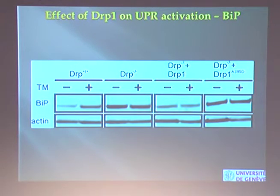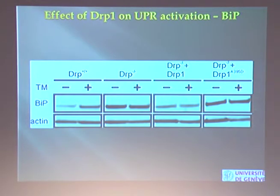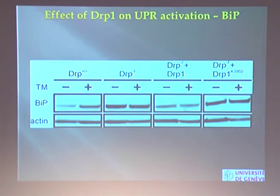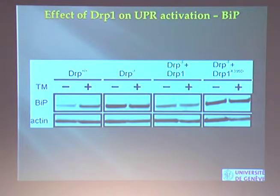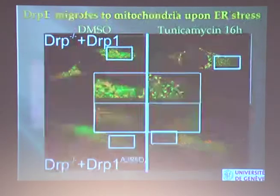We also checked for the presence of proteins expressed at higher levels upon stress. Here, if you see an intense band, you have higher protein presence. The sensor of unfolded proteins in normal cells shows an increase in expression upon treatment, as expected from unfolded protein response activation. In cells without DRP1, this protein is always expressed — they are permanently in stress. If you reintroduce DRP1, the situation normalizes; reintroducing the mutation keeps cells permanently stressed.